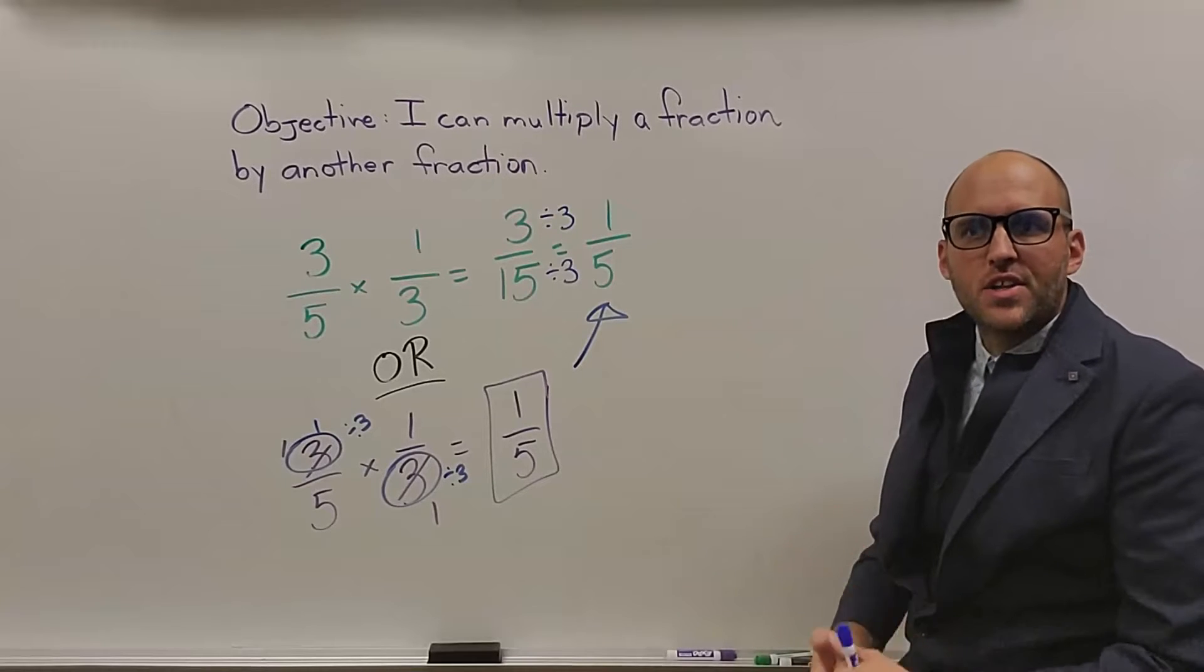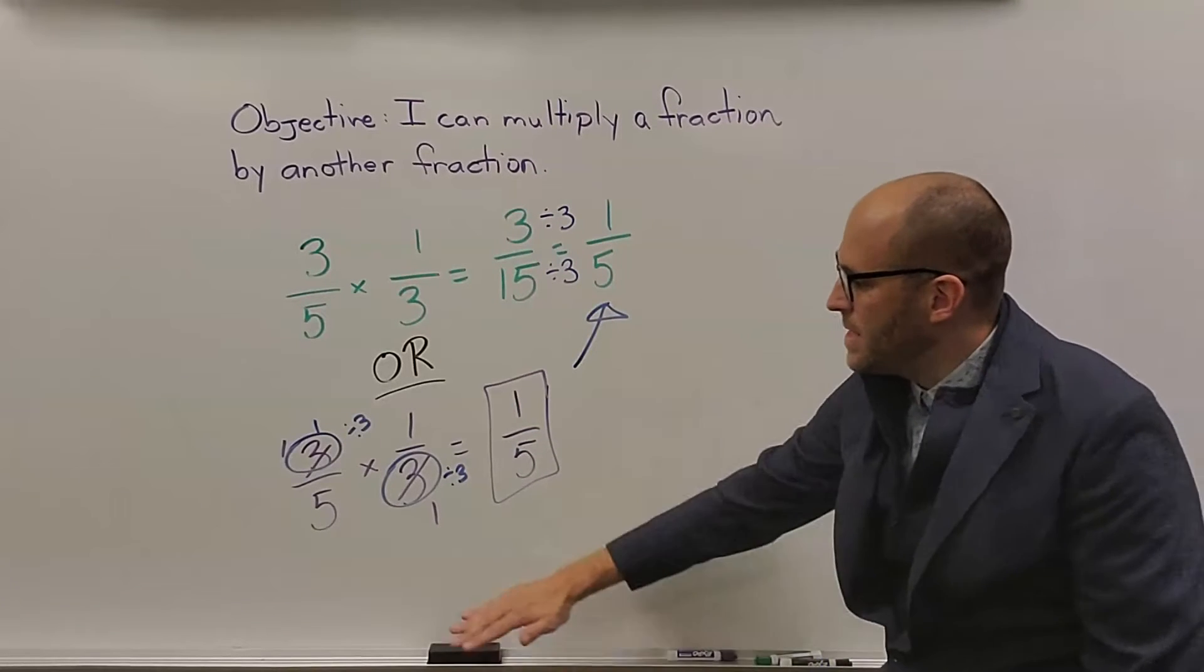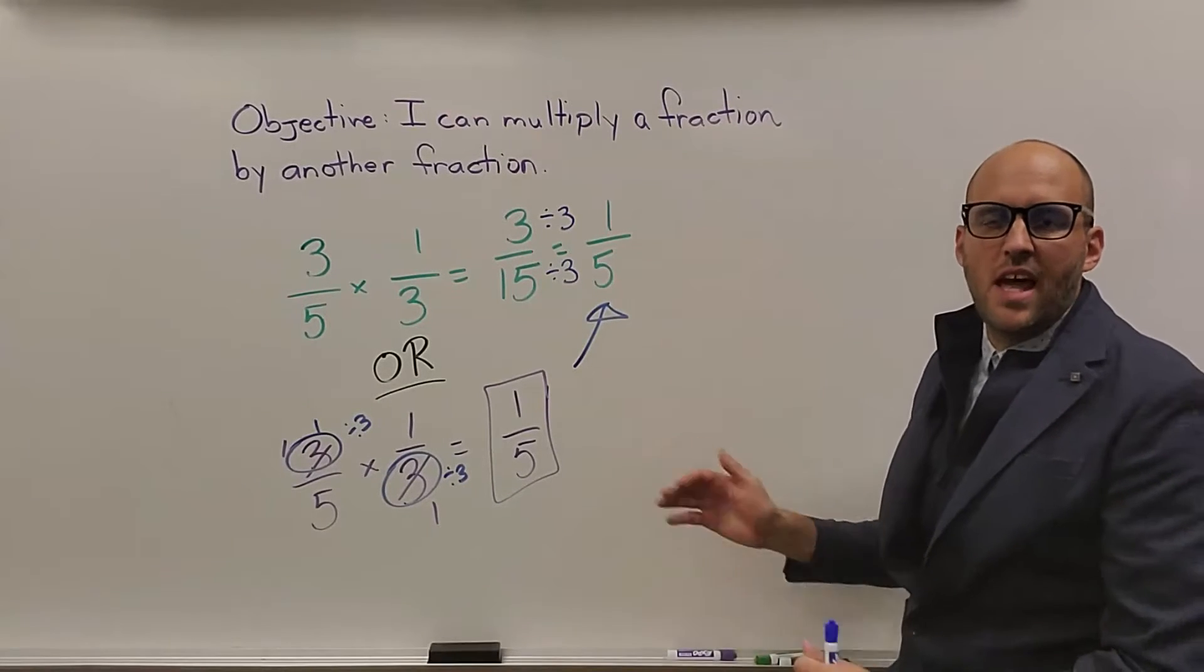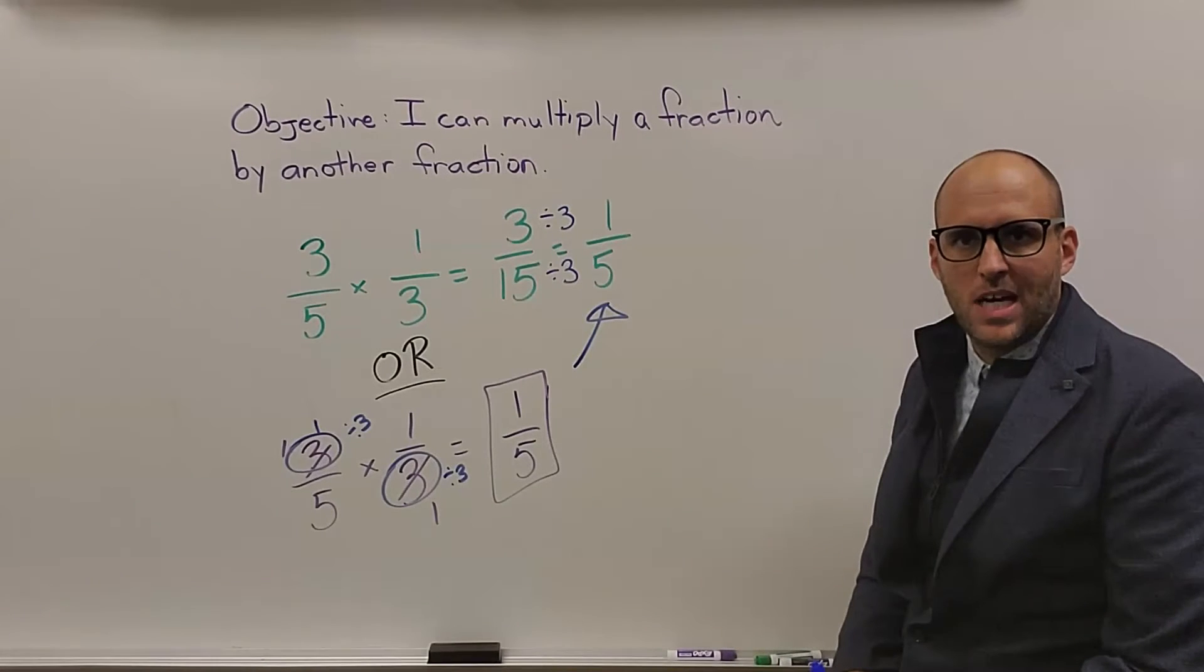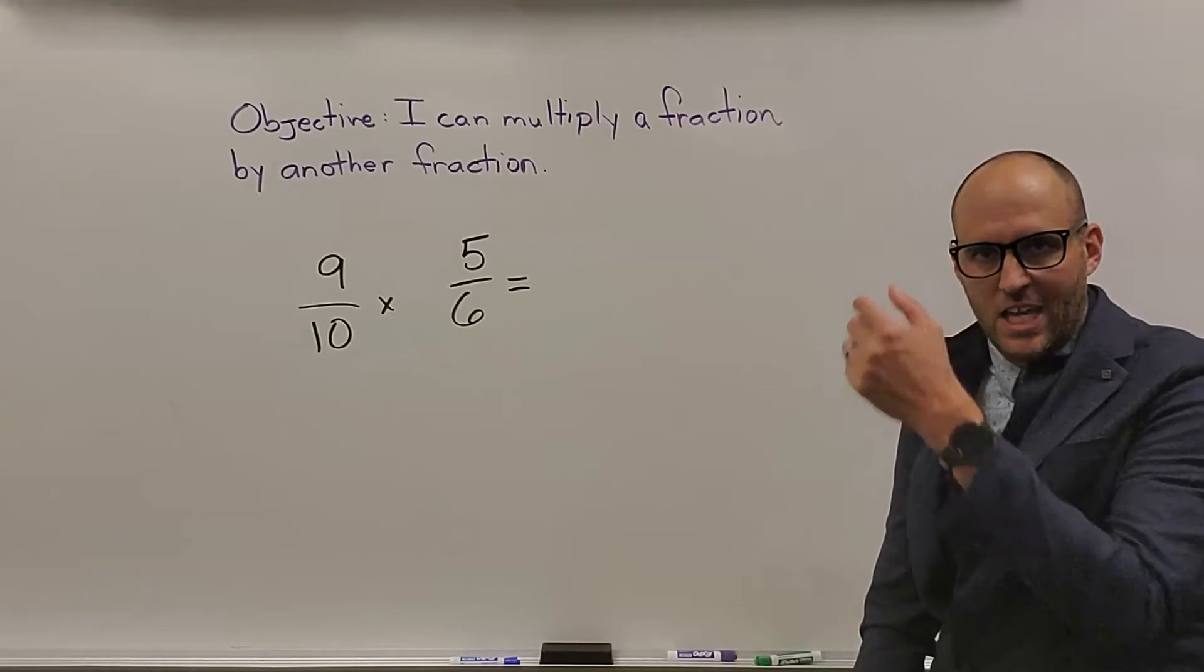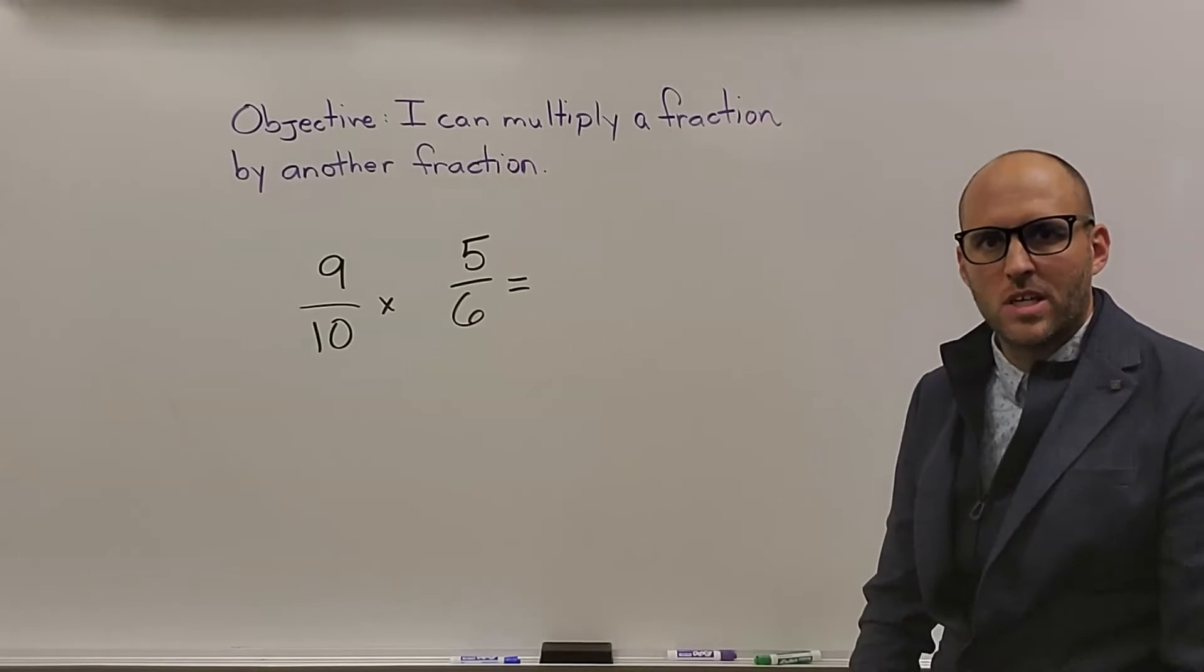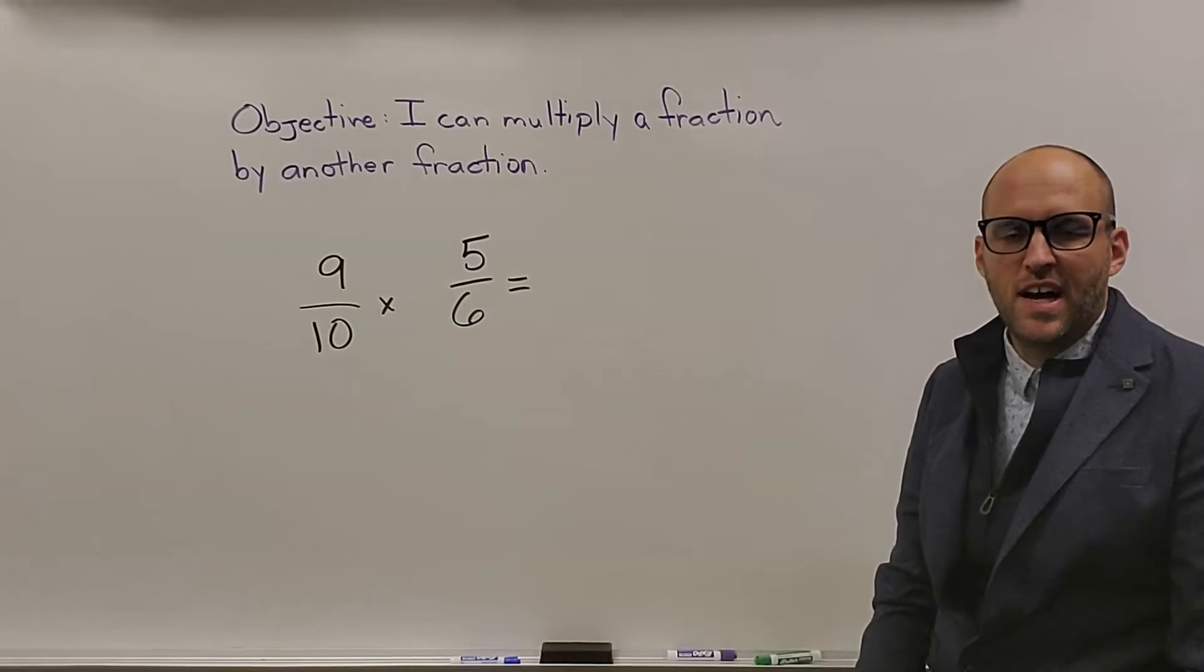I'll do another example where I show both methods, and then I'm primarily just going to show the simplifying. But, as you see, either way, you should still end up with my answer when you're done. So, let's check out this next problem. I gave you a little bit bigger one on purpose to show the value of simplifying before we multiply. But, do either way that works best for you. We have 9/10 times 5/6. See if you can find the correct answer.